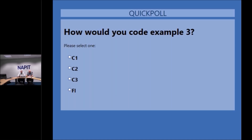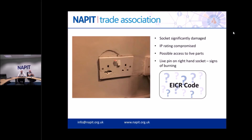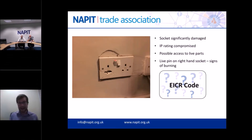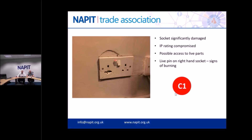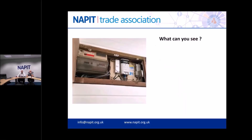The fourth image shows a socket that's completely smashed - IP rating compromised, possible access to live parts, and the live pin on the right-hand side showing signs of burning and thermal damage from taking a significant load. Poll: 97% correctly coded this as C1. Absolutely right - there's access to live parts; you can put a finger, probe, or prod in there. If you can see it and touch it, it'll kill you now - that's an immediate C1.